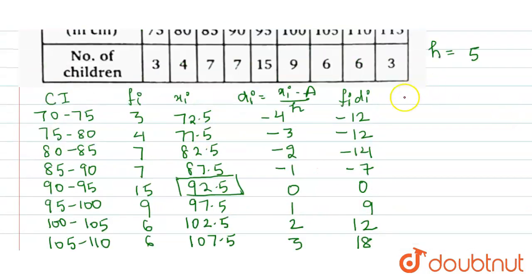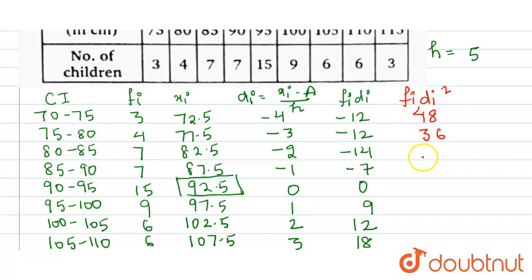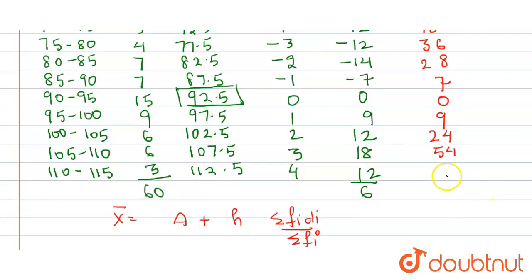In the next column, let us calculate the values of fᵢdᵢ². We square the value of dᵢ and multiply by fᵢ. The values are: 48, 36, 28, 7, 0, 9, 24, 54, and 48. The sum of fᵢdᵢ² equals 254.